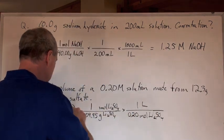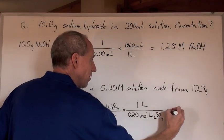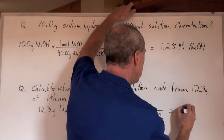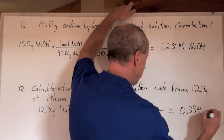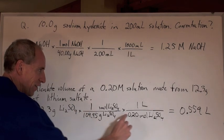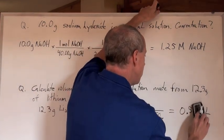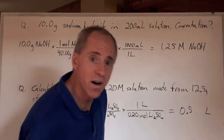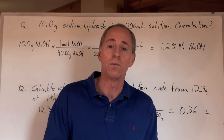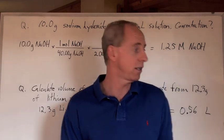Look what we've got: grams cancelling, moles cancelling, liters left over — that's what we want, the volume in liters. When you do the math, you get 0.559 liters. But look at significant digits: three, infinite, five, two — you've only got two significant digits. So the answer is 0.56 liters of solution. That's how you do questions with masses involved — here calculating concentrations, and here calculating volume.